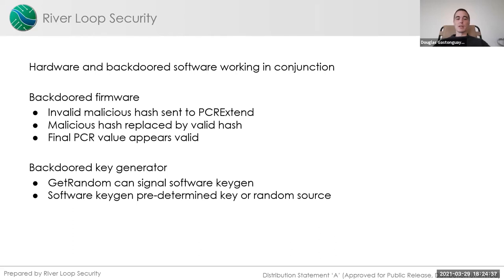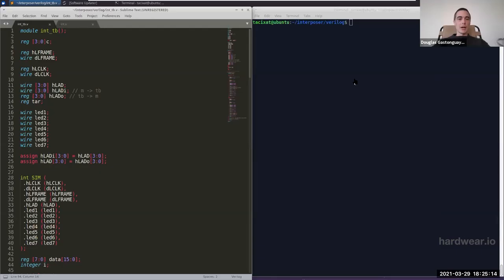What we ended up targeting is GetRandom, which allowed us to kill the transaction. In that case, hardware interacting with software could signal to a malicious key generator when to start replacing or failing functionality, so that a weakened key could be used rather than the hardware-secured key.